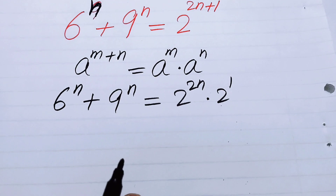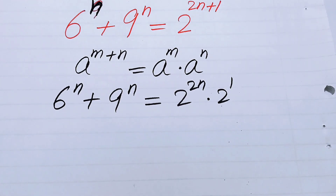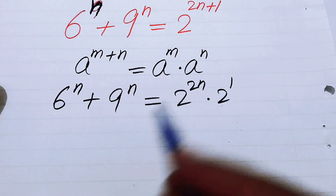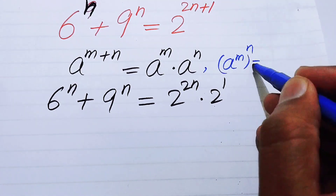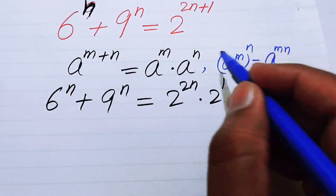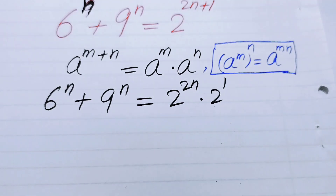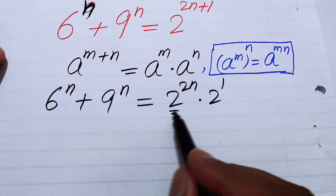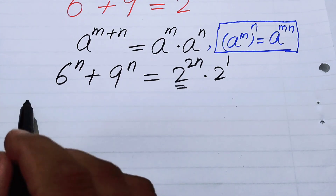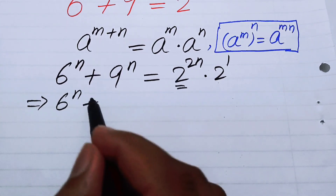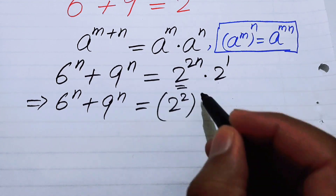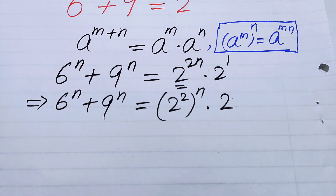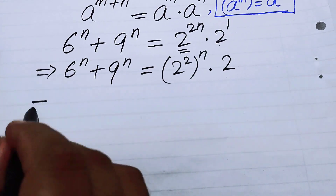We will again use another exponential law: a to the power of m to the power of n equals a to the power of m times n. We use this law on the term 2 to the power of 2n, rewriting it as 2 to the power of 2, its whole power n. So the expression becomes 6 to the power of n plus 9 to the power of n equals 2 squared to the power of n, times 2.